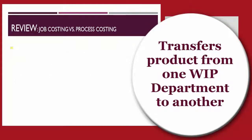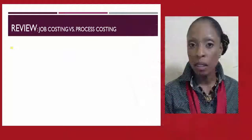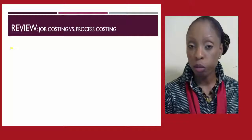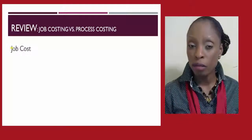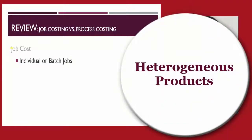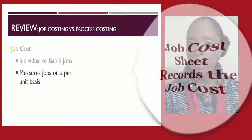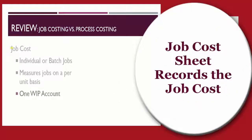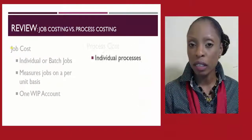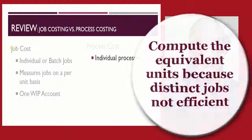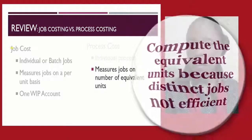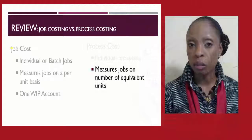If we were to contrast a job cost environment to a process cost environment, here are some differences and similarities. They share the same product costs. However, within a job cost environment, heterogeneous products are either completed on an individual or a batch basis, and there is typically just one work-in-process account. Within a process cost environment, the cost focuses around the individual processes, and the measures of the job are on an equivalent units of production basis. There are typically several work-in-process accounts.